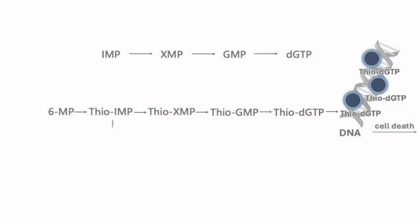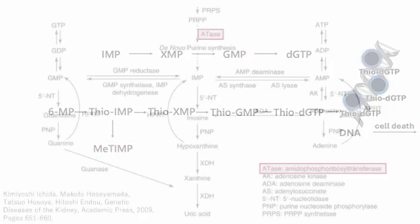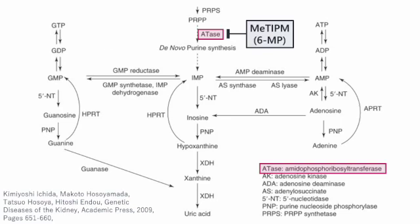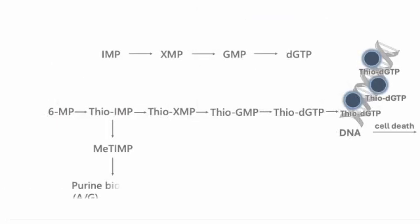Mercaptopurine is converted to methylthio-IMP. It is a potent inhibitor of amido-phosphoribosyl transferase, or PRPP amidotransferase, and inhibits purine biosynthesis. Mercaptopurine inhibits DNA, RNA, and purine biosynthesis.